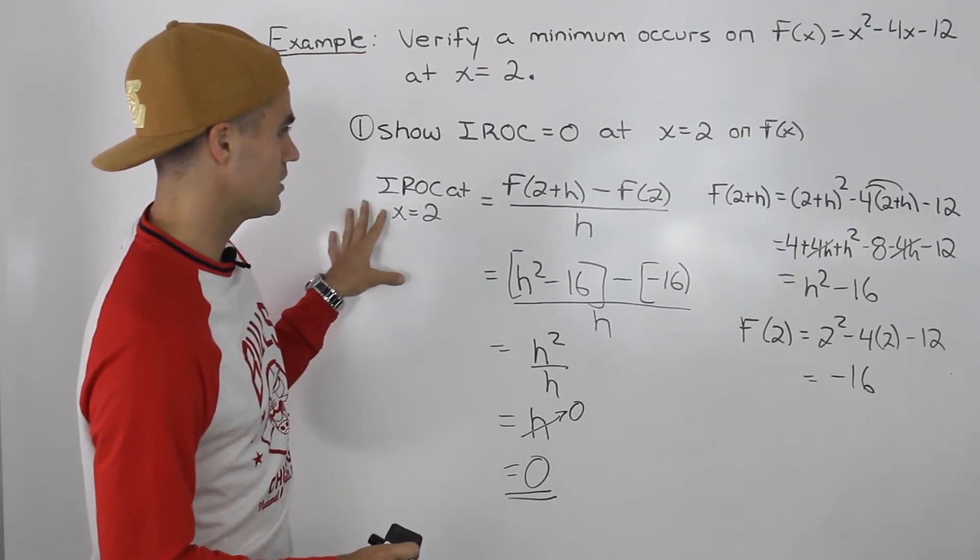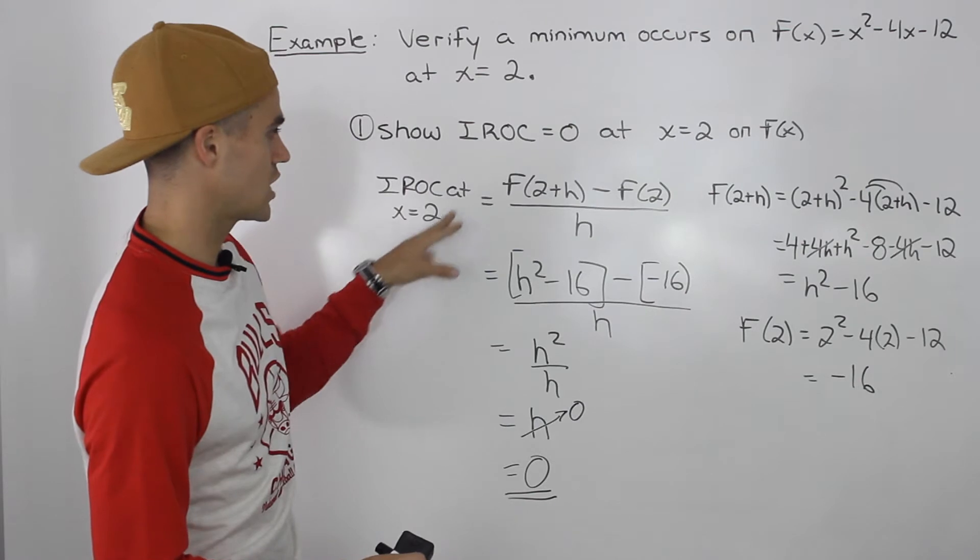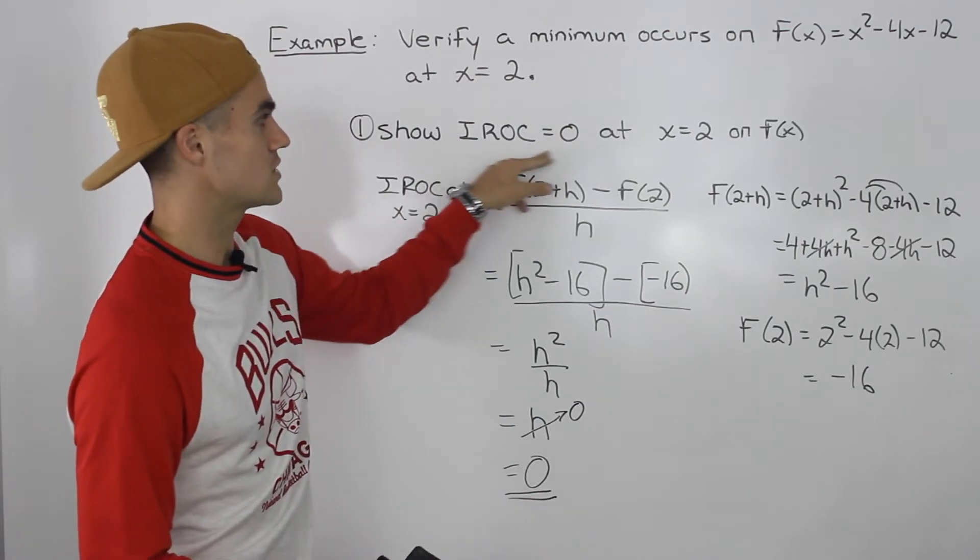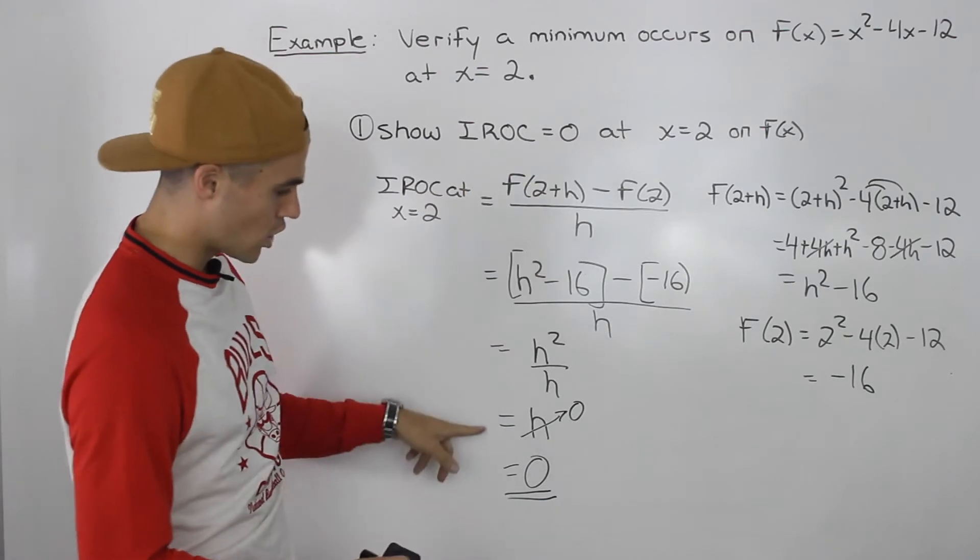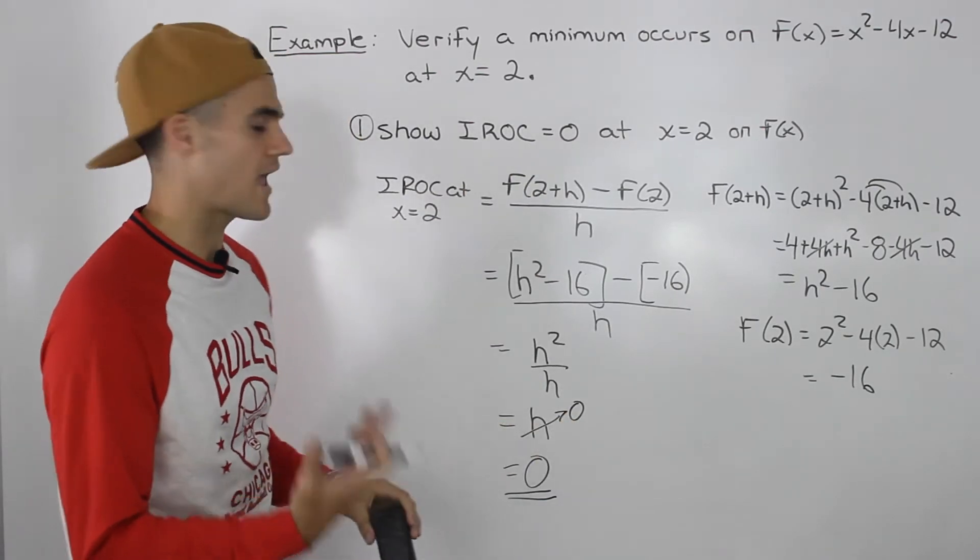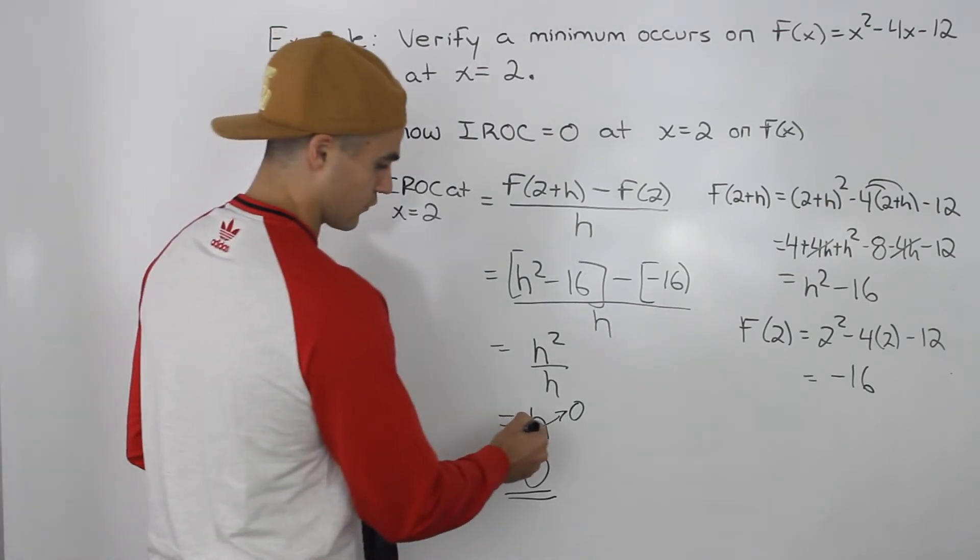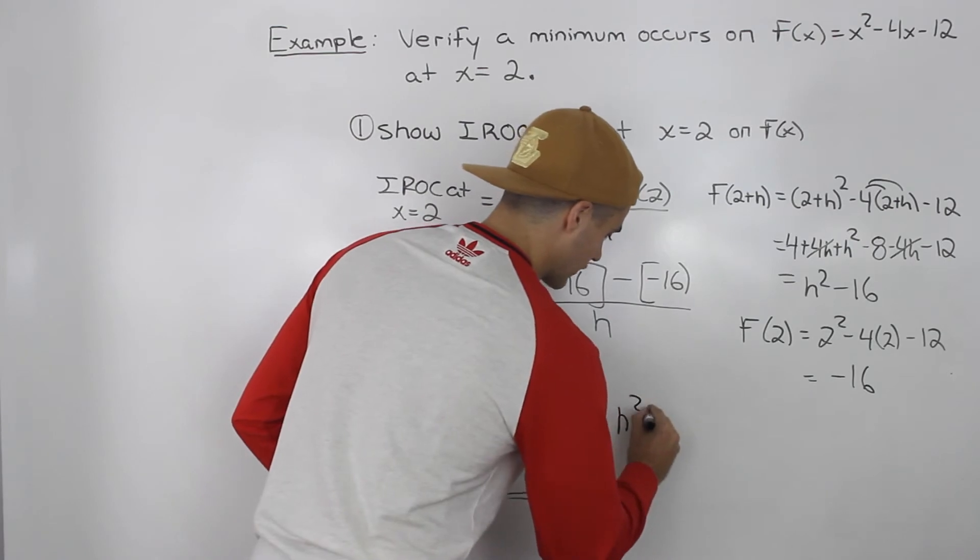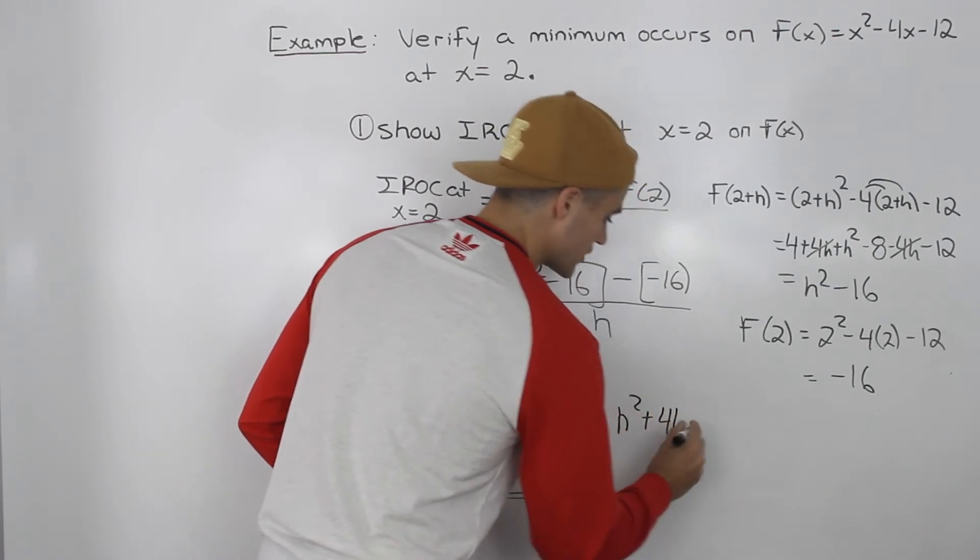Now, if you're going to be finding the instantaneous rate of change using the difference quotient, for this step, since the instantaneous rate of change has to be 0 at the end, all your expressions at the end should be only in terms of h. For example, like this expression, we only have an h left.